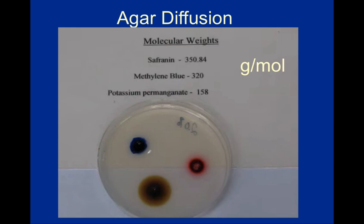To carry out this experiment, we take an agar plate, cut a few different wells, and drop some dye into them. Each dye particle has a different molecular weight. Potassium permanganate dye has a molecular weight of 158 grams per mole, methylene blue dye has a molecular weight of 320 grams per mole, and saffranin dye has a molecular weight of 350.84 grams per mole. Potassium permanganate is significantly smaller than the other two, so it's going to diffuse faster and further. The brown dye — potassium permanganate — has diffused the furthest because it is the smallest.